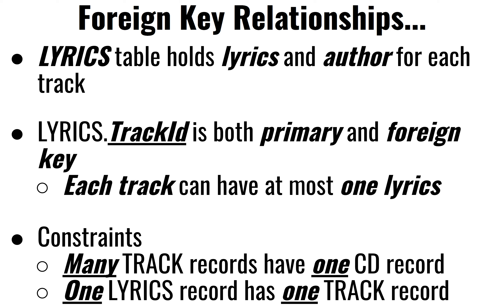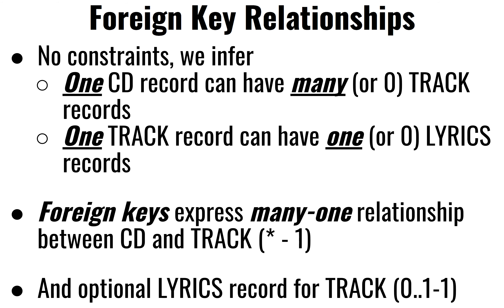In the Lyrics table, we have who the author is, and the track ID is both a primary and foreign key, which captures the fact that one track has just one lyric. Some constraints: many tracks can refer to the same CD, and one lyric refers to exactly one track — there's a one-to-one relationship between tracks and the lyrics that go along with them.